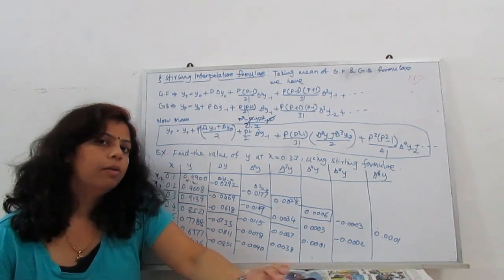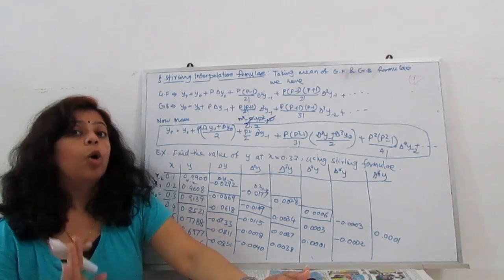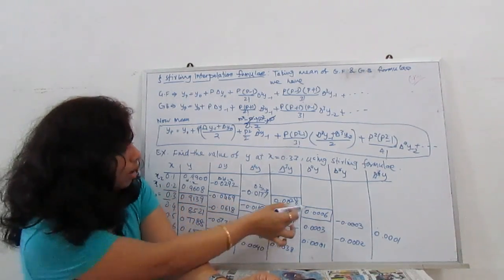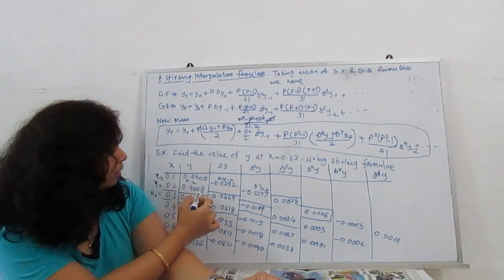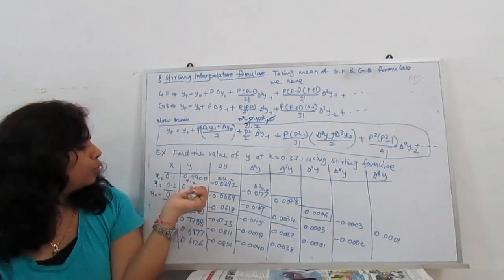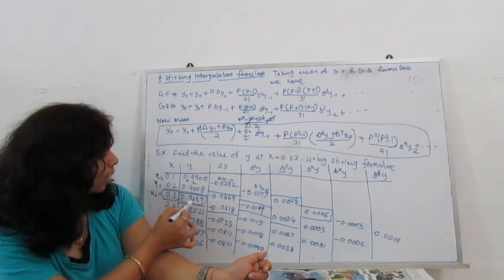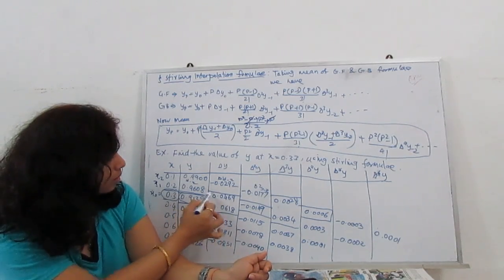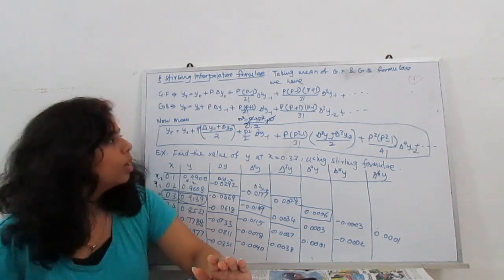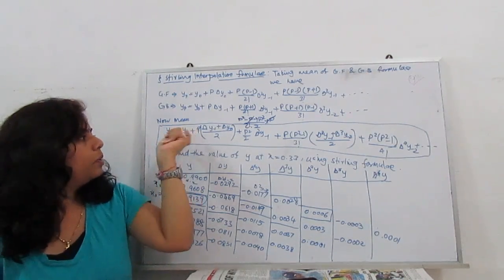When substituting values from the central difference table: for Gauss forward we use center, then lower, upper, lower, upper; for Gauss backward we use upper, lower, upper, lower. For Stirling, we use all the values around x0. So y0 = 0.9139, then the two adjacent first-difference values, then two second-difference values, then two third-difference values, and so on.